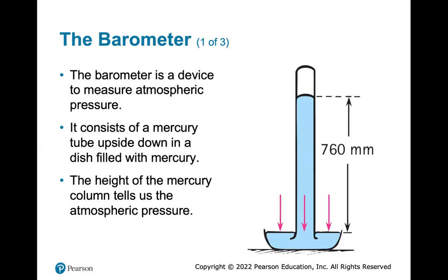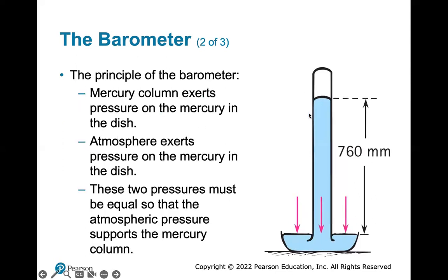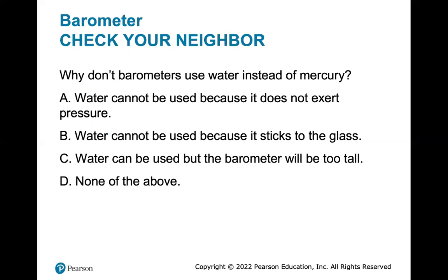A barometer consists of a mercury tube inverted upside down in a dish filled with mercury. The height of the mercury column tells us the atmospheric pressure — it goes up with high pressure and down with low pressure. The mercury column exerts pressure on the dish; the atmosphere exerts pressure on the dish; these two pressures must be equal, so atmospheric pressure supports the mercury column.